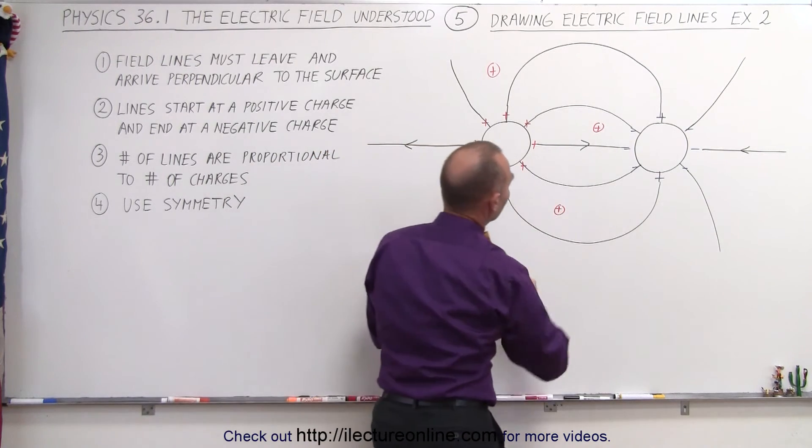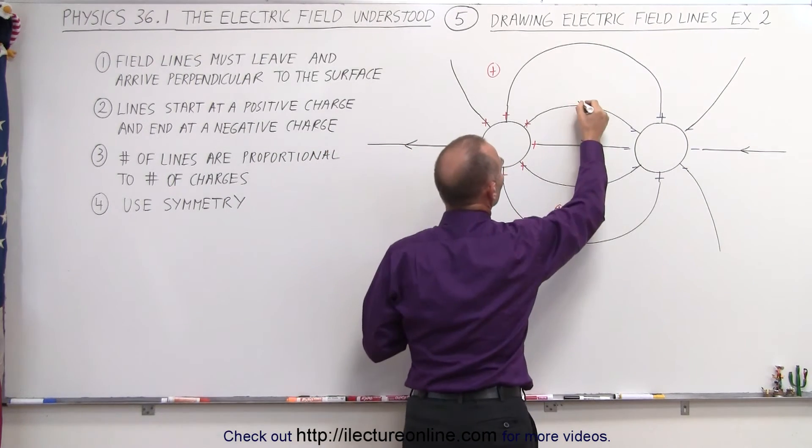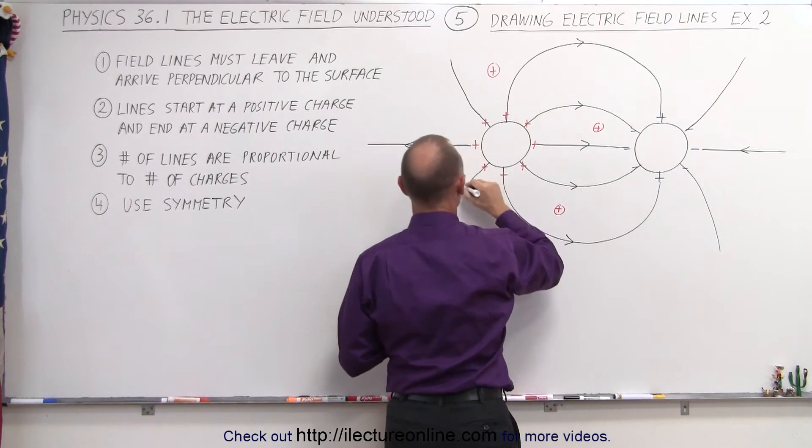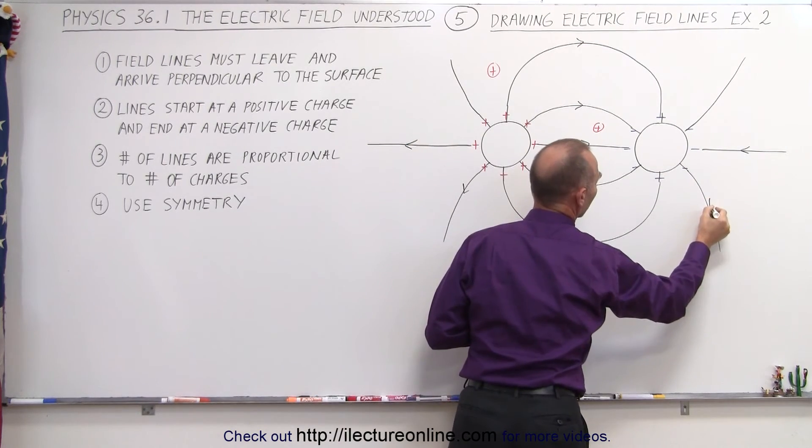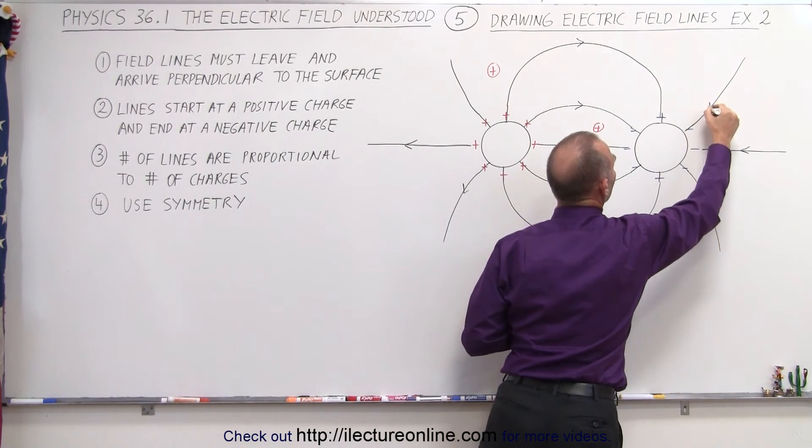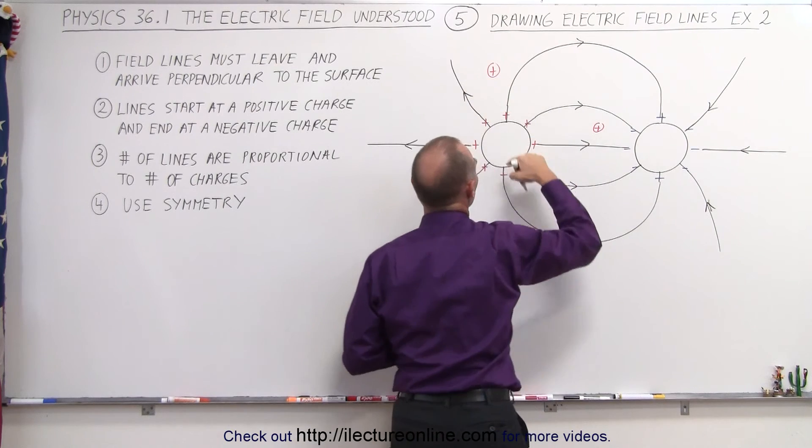And then you simply go ahead and draw the little arrows in there so we can see the direction of the electric field. The arrows point towards the negative charge here, and away from the charge here. So then I can see over here, the force would be something like this.